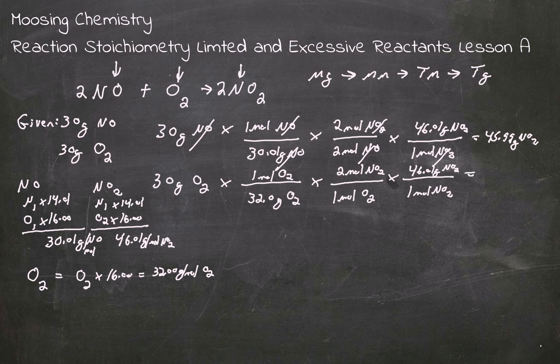All right. So when we do this, let's put these numbers in our calculator. 30 divided by 32 times 2 times 46.01.